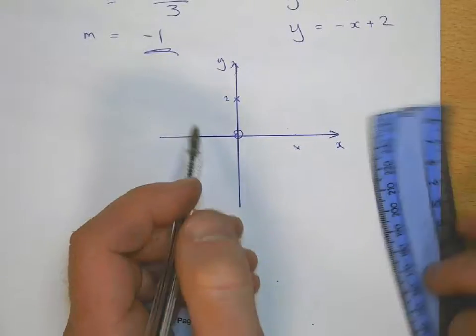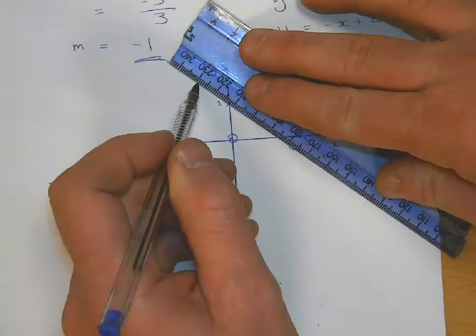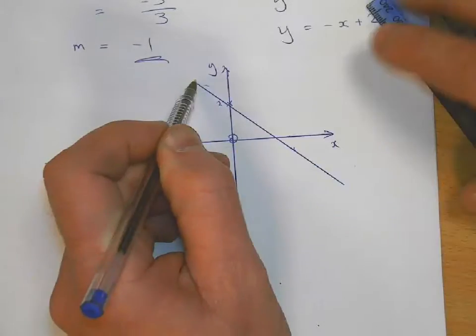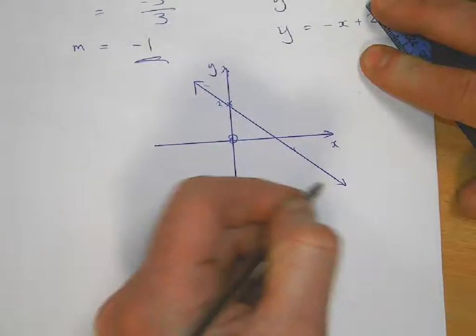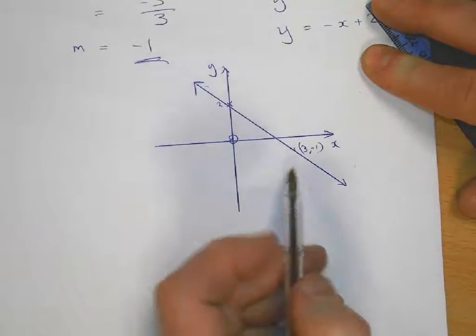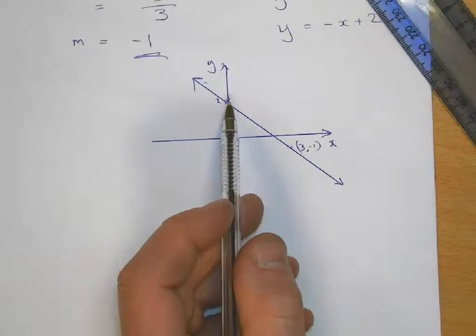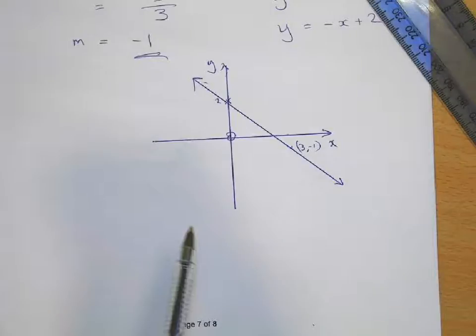So your straight line looks like that, and you can see there it's touching at two. It touches the y-axis at two. So that's why we know c is two.